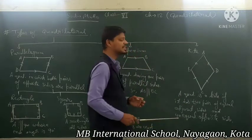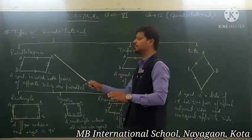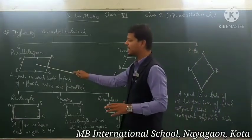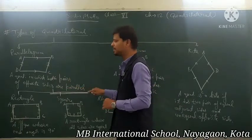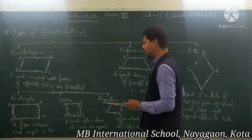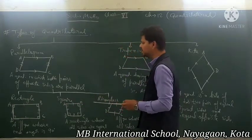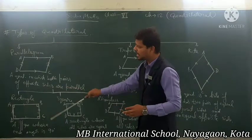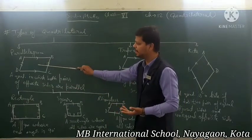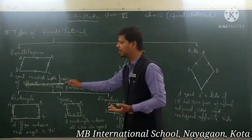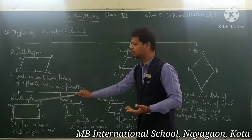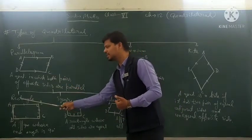So far we have three types of quadrilateral: parallelogram, trapezium, and kite. After that, parallelogram also has some further types. The types of parallelogram are rectangle, square, and rhombus. Rectangle, square, and rhombus are all types of parallelogram. Parallelogram itself is a type of quadrilateral, so all of these are also types of quadrilateral. There are three types of parallelogram: rectangle, square, and rhombus.